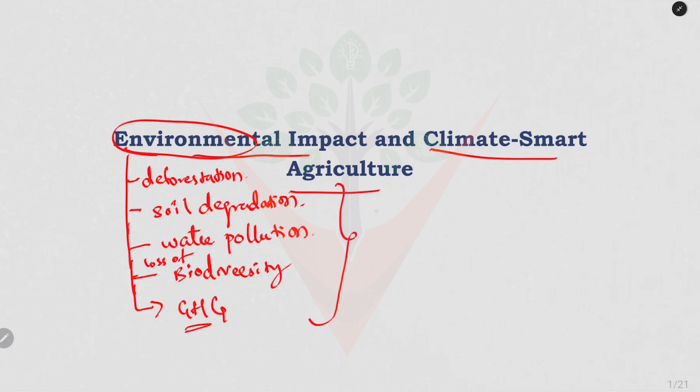To mitigate these effects, we need to move towards sustainable farming methods like organic farming, crop rotation, and agroforestry, which can help reduce these impacts.